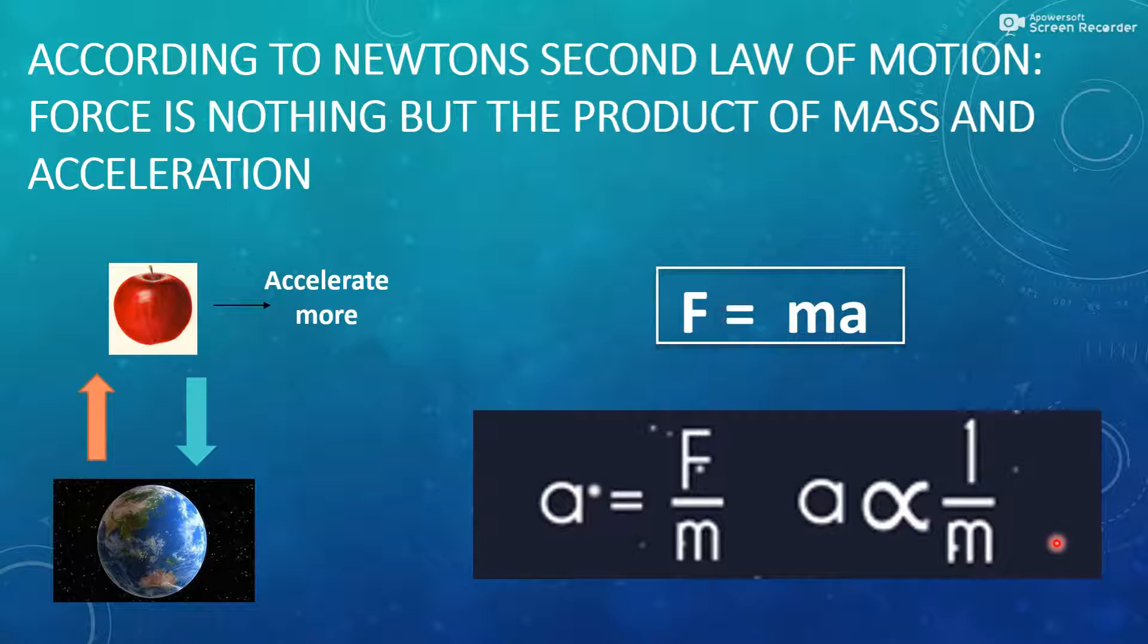If the acceleration is more, then mass will be less. Or if the mass is more, then acceleration will be less. As we know that the mass of the earth is very large as compared to the mass of the object, so the object will accelerate more.